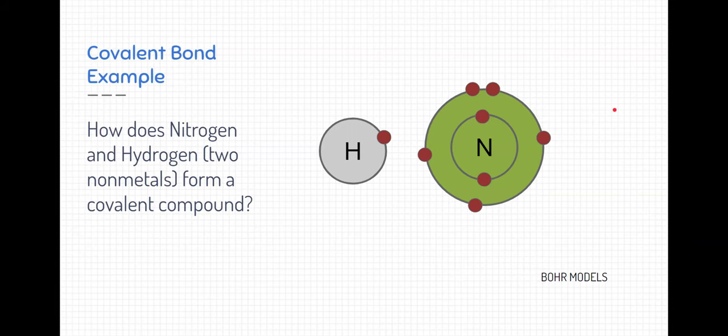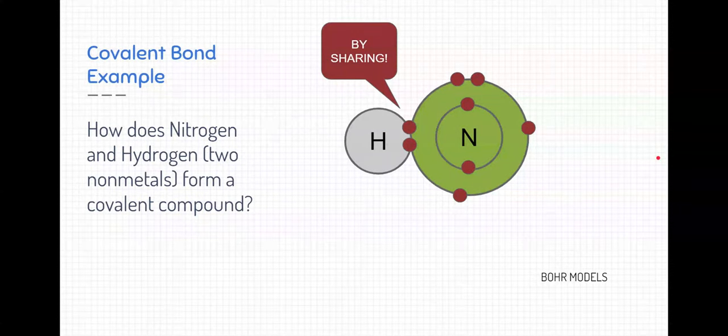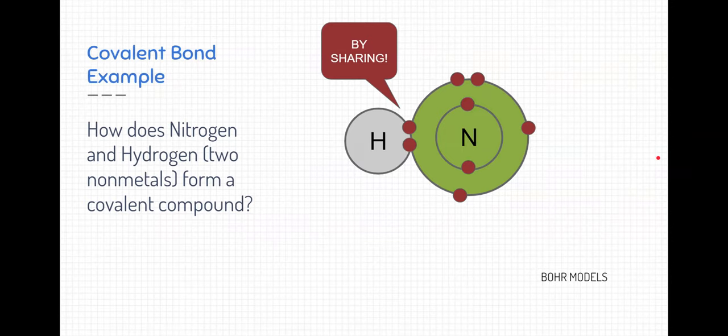So let's take a look at an example. Here we have two nonmetal elements, hydrogen and nitrogen. Both of them typically do not like to give up their valence electrons. So how do they work together to do that? Well, you might have figured it out. What they're going to do is they're going to share their valence electrons, kind of like this. Notice that the electrons kind of overlap in their orbitals, and they're double dipping on those two electrons.